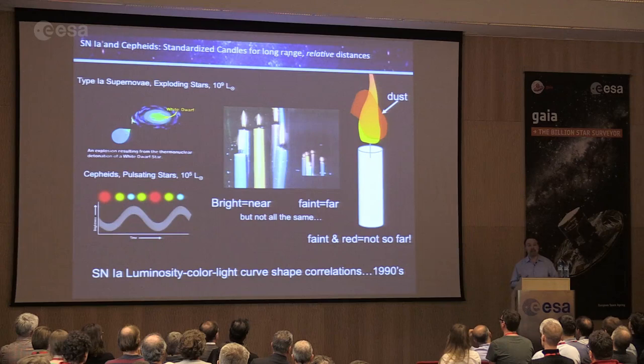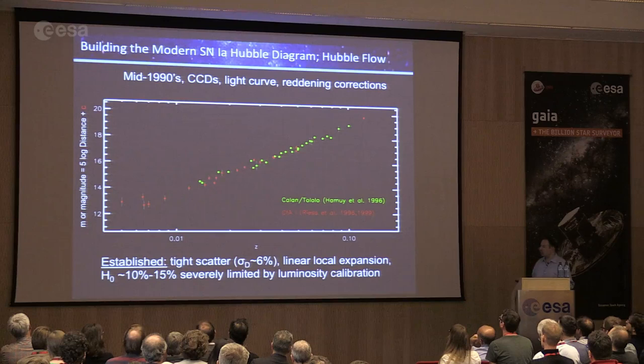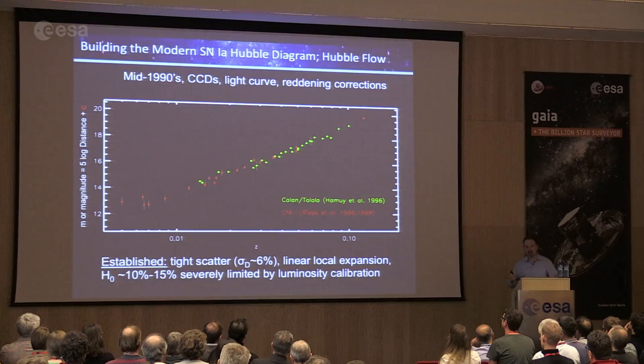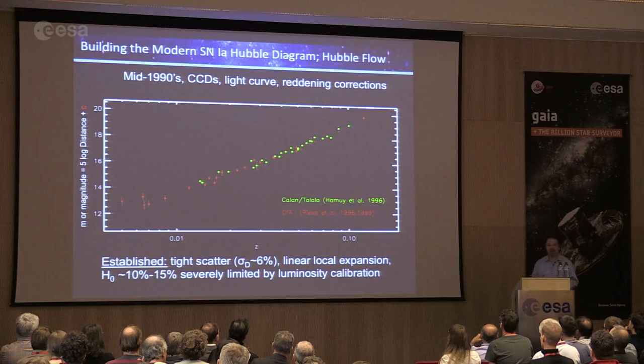This capability came to the fore in the 1990s. The first group was the Calán/Tololo survey — shown in green is the Hubble diagram, the empirical measurement of the expansion rate: redshift on one axis and supernova brightness on the other. There's an arbitrary constant, because to know the true distance you must find that constant — to measure the true expansion rate rather than just a relative one. Around the same time, my thesis work also produced a number of these measurements.